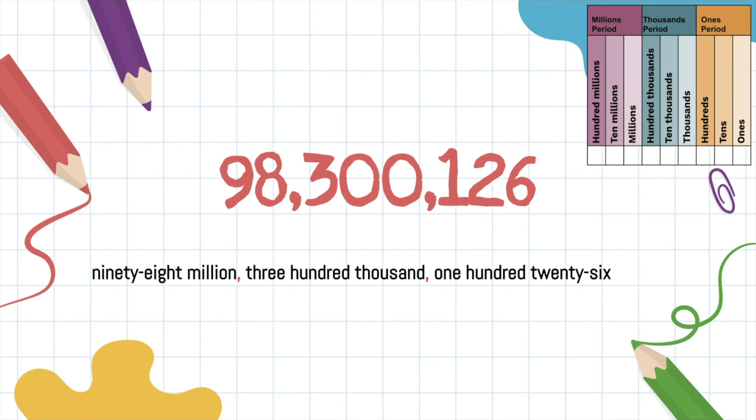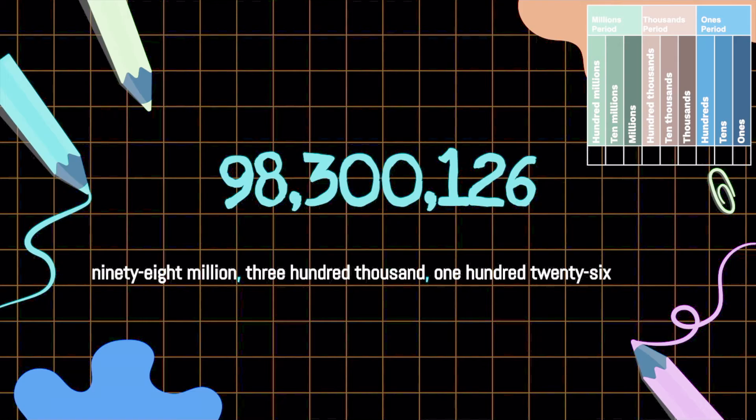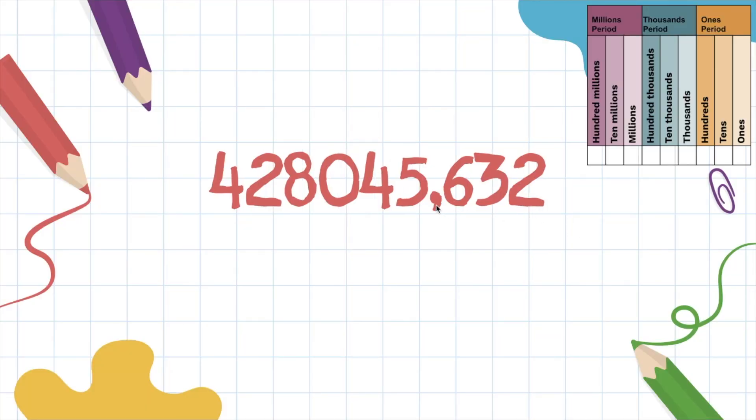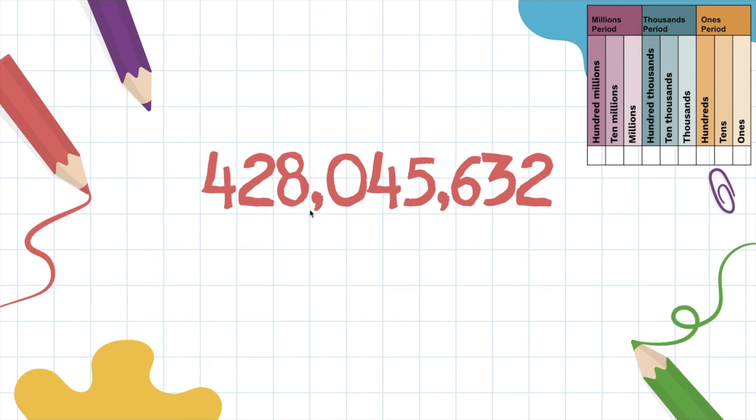Check us out. Give yourself a pat on the back. Let's do another one. You know there's three places in the period starting from the right. So here we go. We got one, two, three, then a comma for me. One, two, three, then a comma for me. One, two, three. I'm out of digits again.